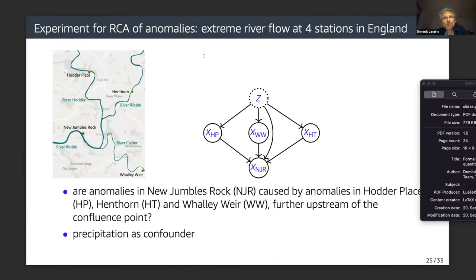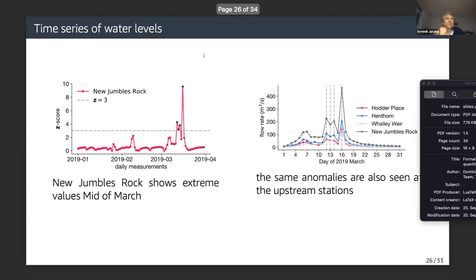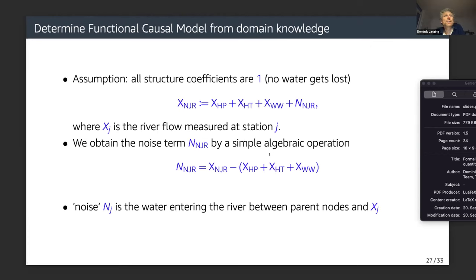A practical experiment for RCA of anomalies: extreme river flow at four stations in England. New Jumbles Rock (NJR) is downstream, and the other three locations are upstream from different rivers, with a confluence point upstream of NJR. Precipitation acts as a confounder. We see an extreme value of river flow at NJR in mid-March 2019, and the other stations also show that anomaly, so we hope to see them contributing significantly.